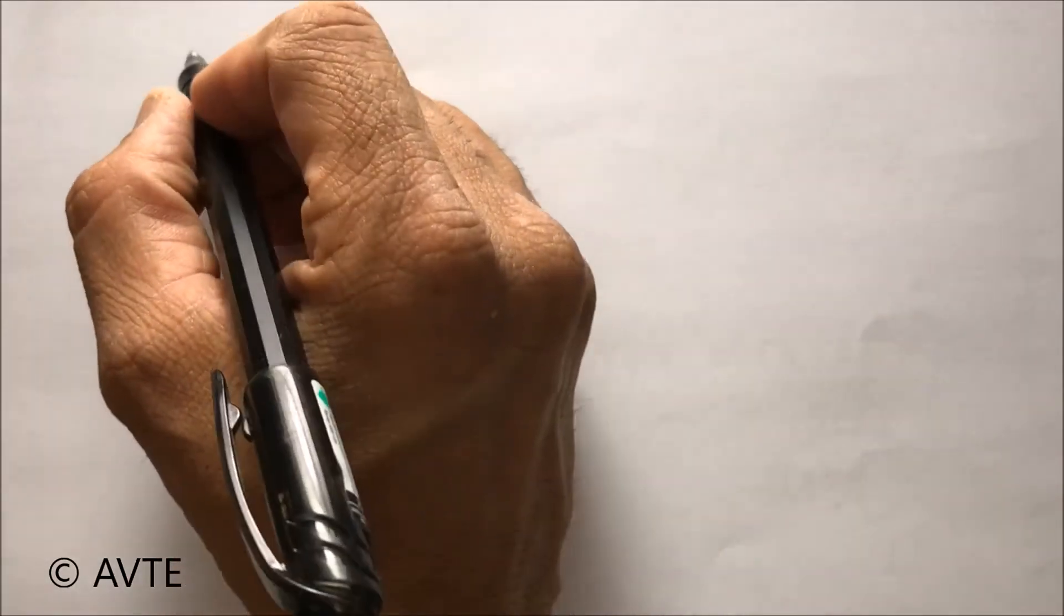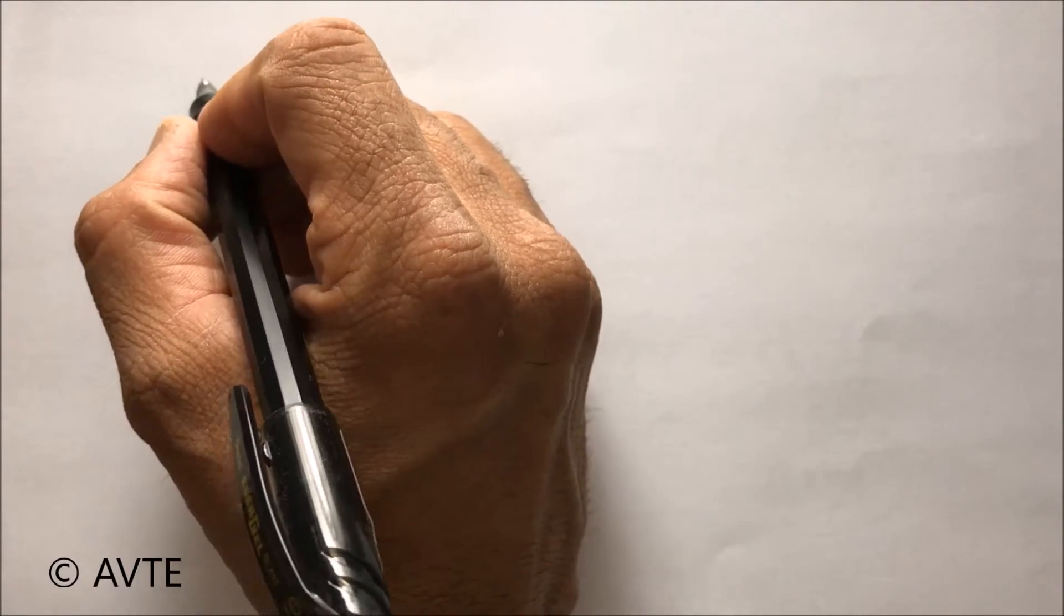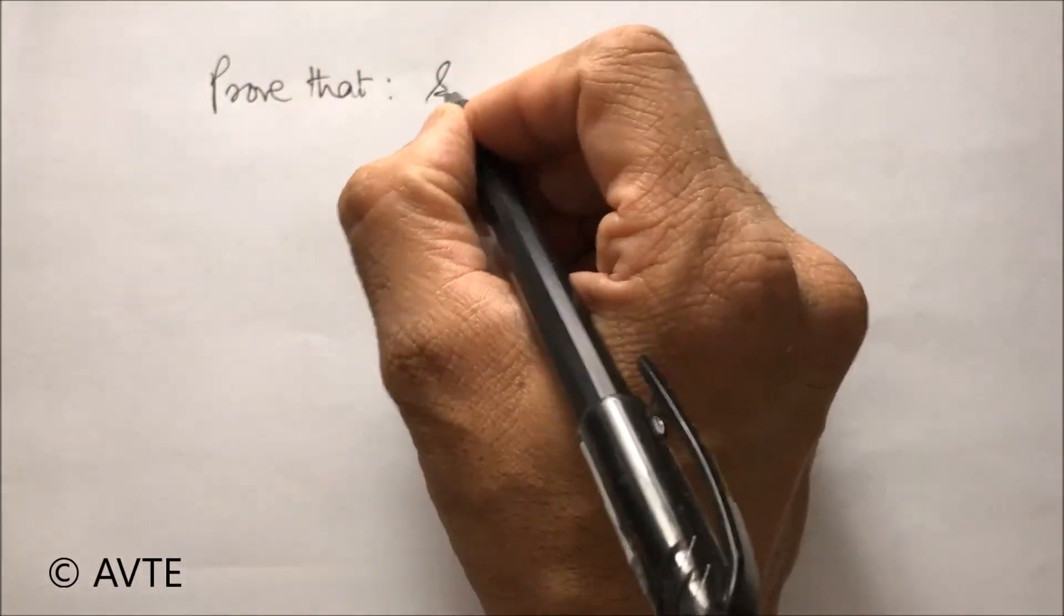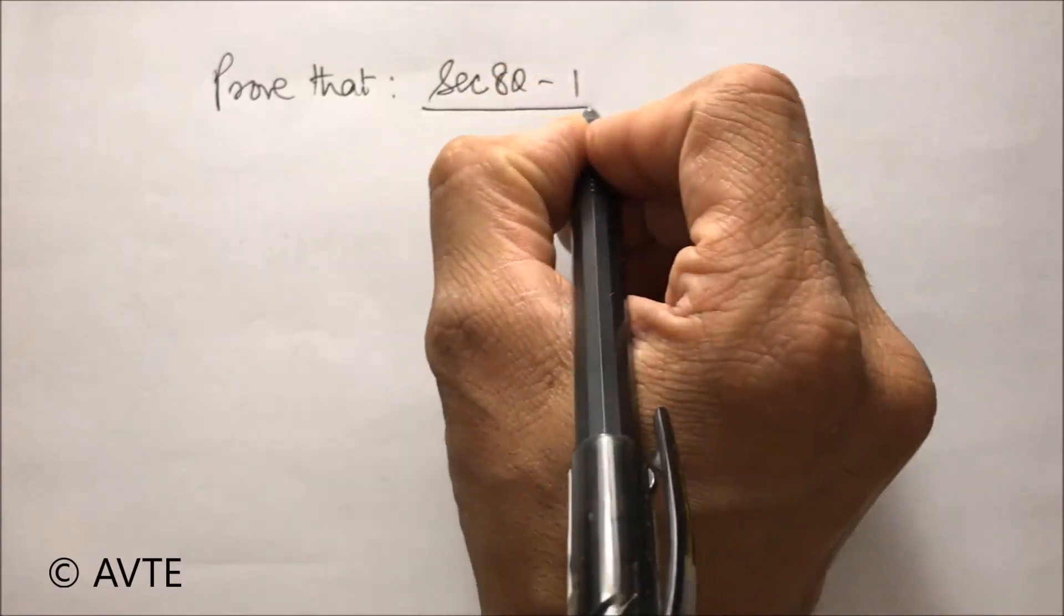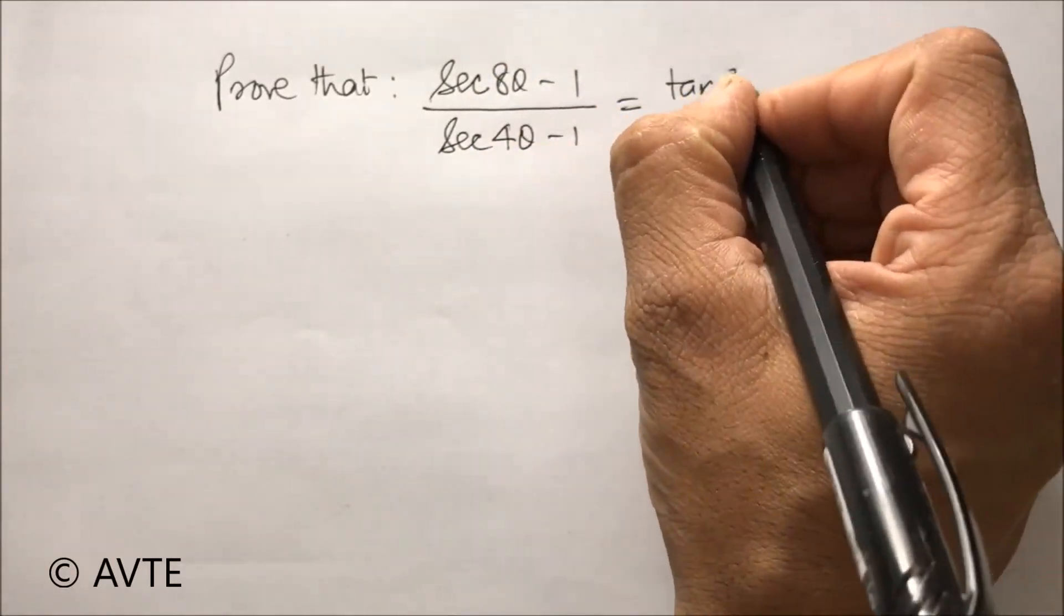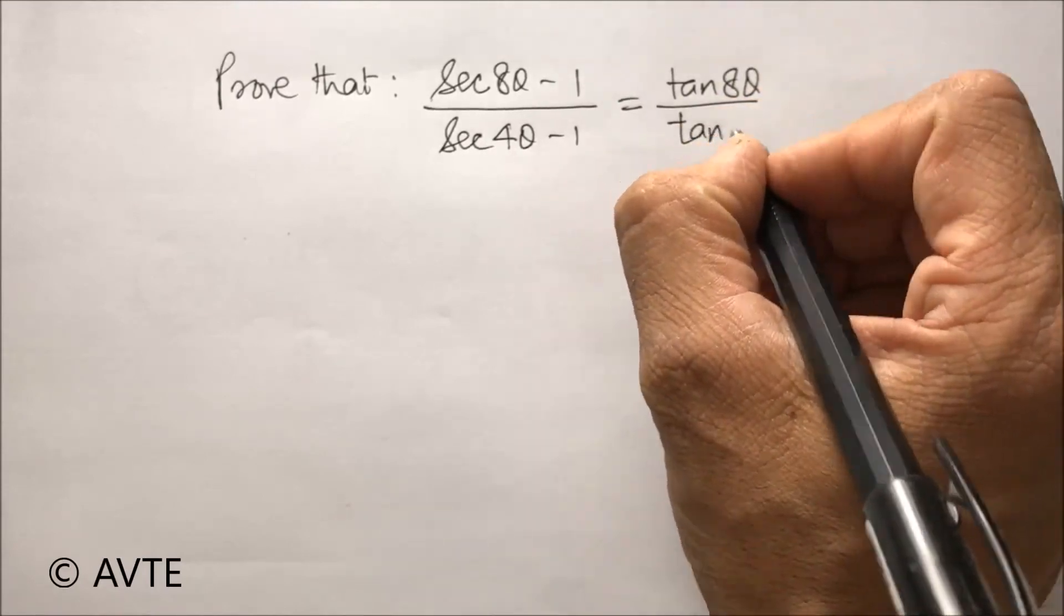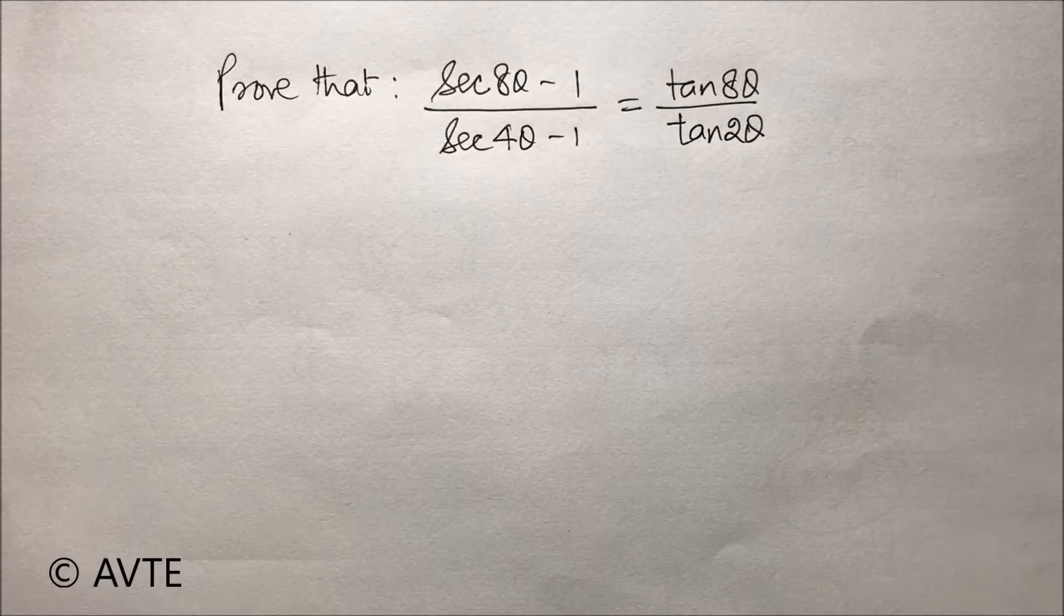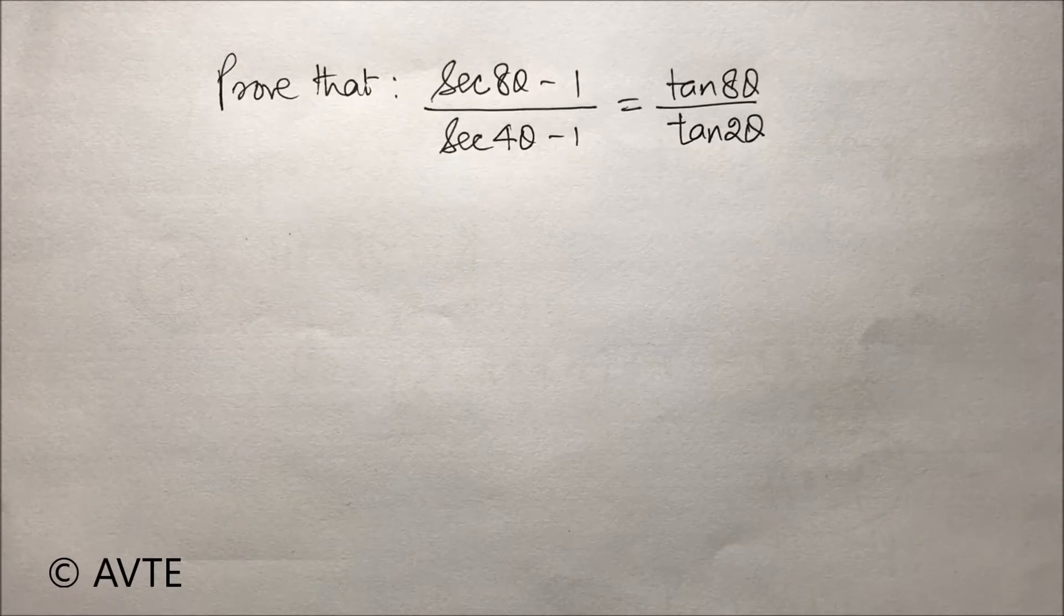Welcome to the very important question on trigonometry. Prove that secant 8 theta minus 1 upon secant 4 theta minus 1 is equal to tan 8 theta upon tan 2 theta.